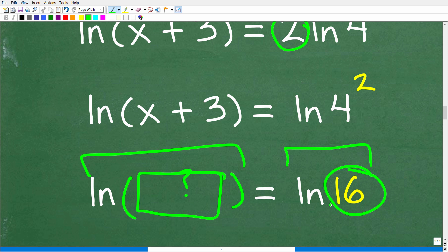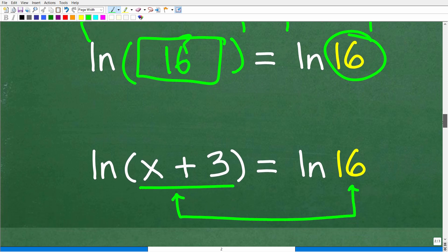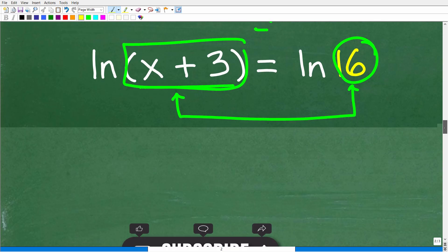Let's think about this. We have the ln of some mystery thing, and we know it's equal to ln of 16. What must this be? If we're saying this thing is equal to this thing, the ln of something equals ln of 16, doesn't this have to be 16 as well? ln of 16 equals ln of 16. Indeed, that is true. Therefore, this x plus 3 must be 16. And hopefully you're going to see, oh wow, this is super easy to solve.